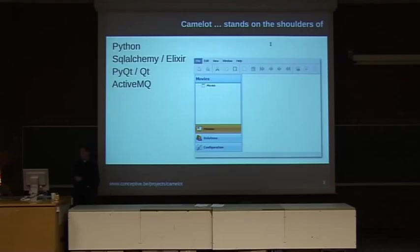Okay, thank you. So Camelot is built with Python, so it relies heavily on Python and the standard Python libraries. A very important part of the framework is SQLAlchemy, which is an object relational mapper in Python which is actually very powerful and has good support for inheritance. Next to SQLAlchemy, Elixir is used, and Elixir makes it very easy to define your object relational mappings. It makes it as easy as just defining plain old Python objects. For the graphical part, PyQt is used.